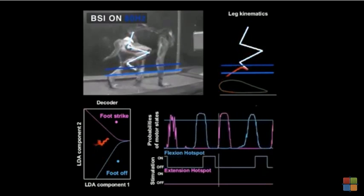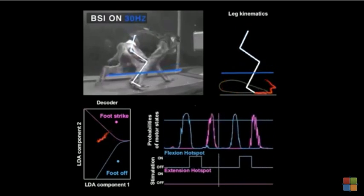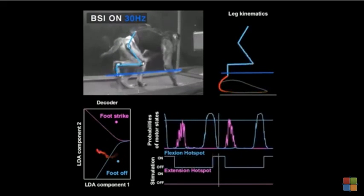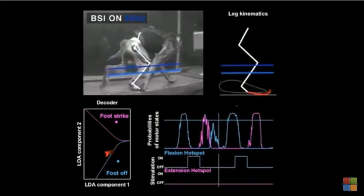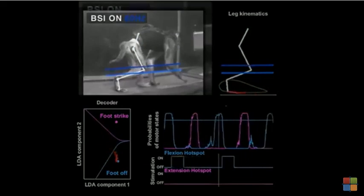The decoder accurately triggered the stimulation protocols without disrupting locomotor movements since the stimulation targeted the proprioceptive feedback circuits that naturally contribute to activating leg muscles during locomotion.